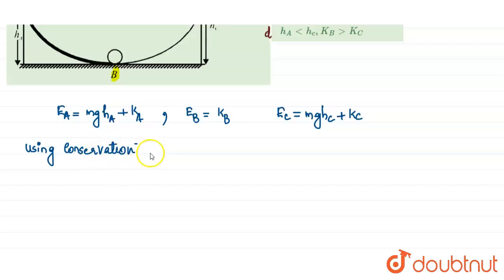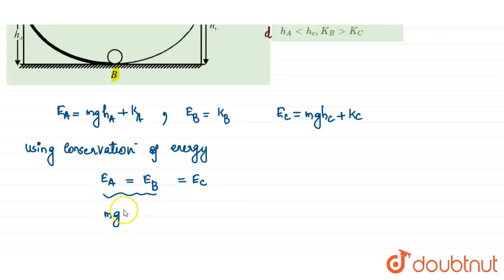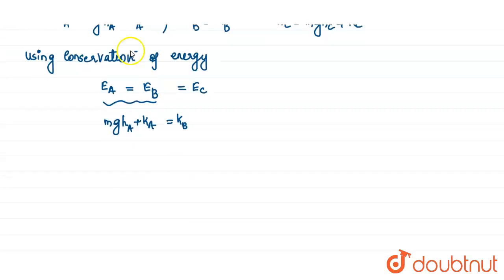Using conservation of energy, the total mechanical energy is constant, so energy at A equals energy at B equals energy at C. Equating A and B: mgh_A plus KA equals KB. From this equation, we get that kinetic energy at B must be greater than kinetic energy at A.